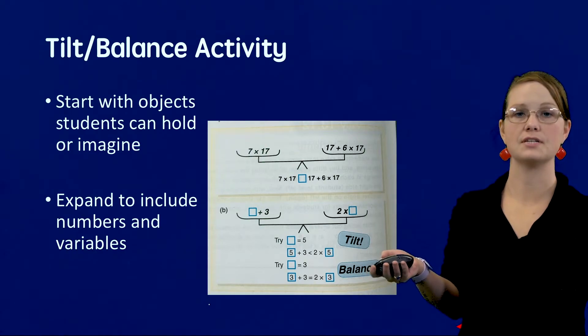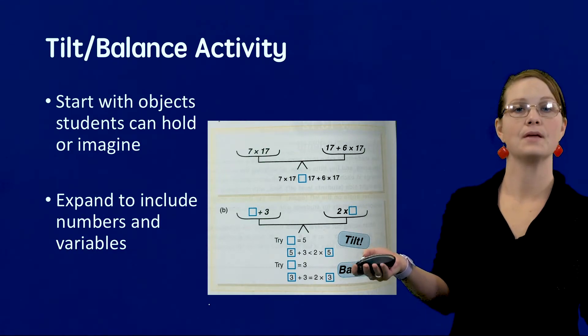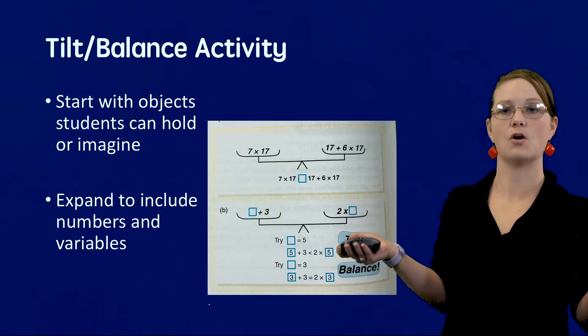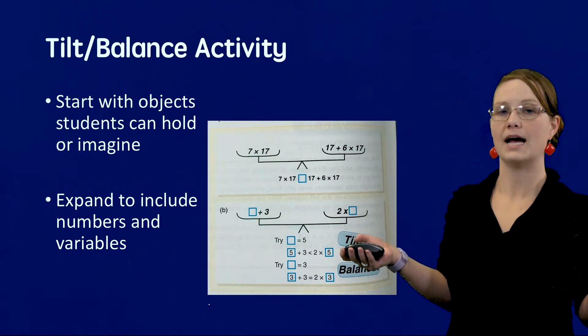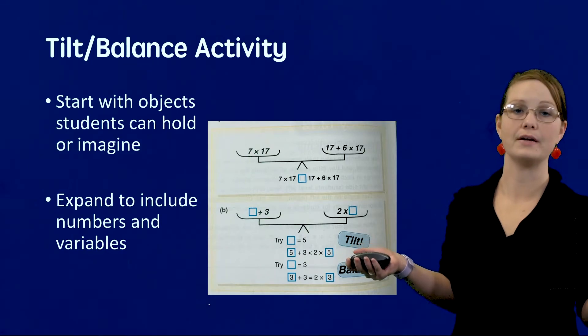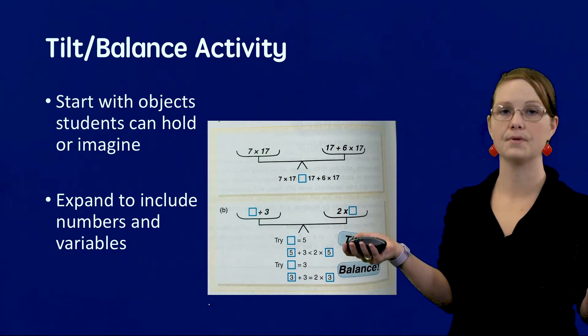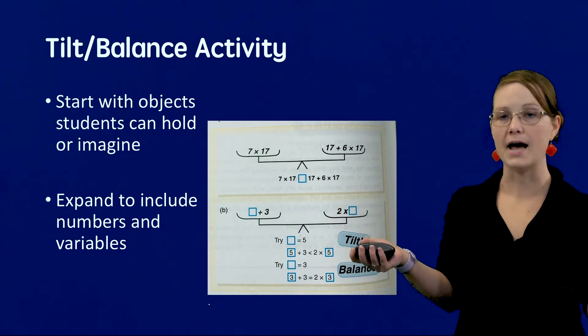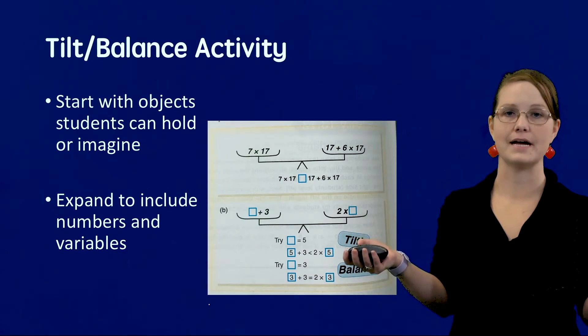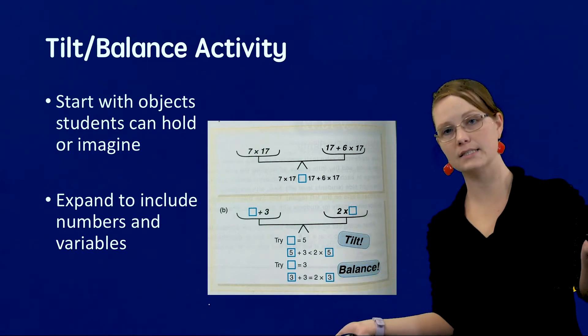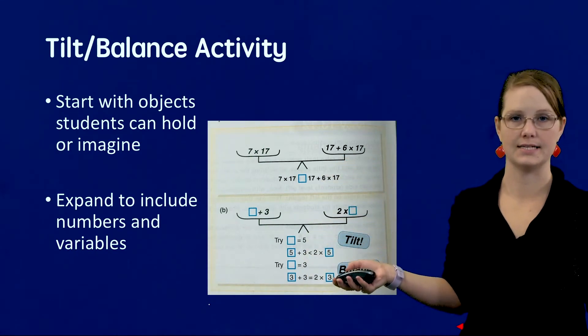So first start by having the students stand up and put their arms out. Imagine both sides of their arms are one half of the scale. Ask students to pretend they are given weighted objects, for example, an apple or an orange, one at a time to hold in each hand. Have them move their arms up and down to demonstrate adding weights, balancing weights between both sides.